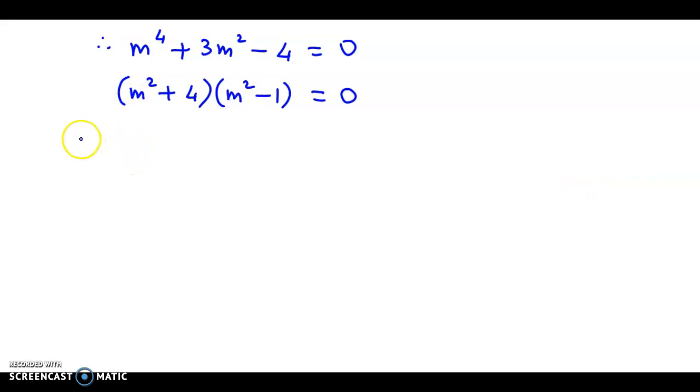Now the values we get are as follows: if you take m^2 + 4 = 0, so m^2 = -4, then m is not a real value. So this we discard, because m^2 = -4 means m is not real.